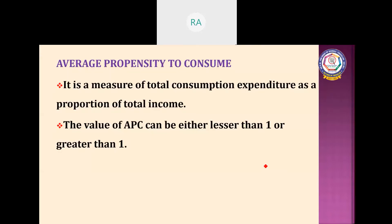Average propensity to consume is denoted by APC, and marginal propensity to consume is denoted by MPC. APC is a measure of total consumption expenditure as a proportion of total income. The formula for APC is C divided by Y.